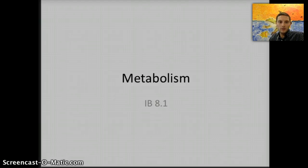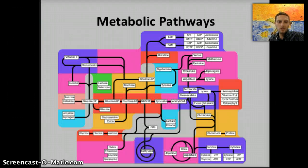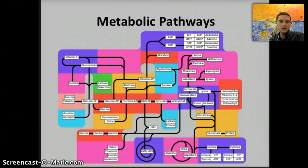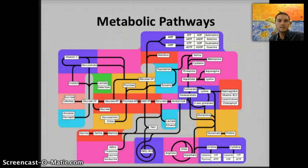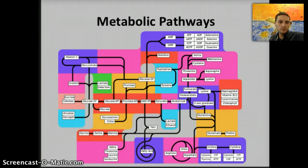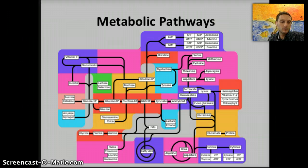A metabolic pathway can be viewed as a sequence — a number of steps that occur in order for something to happen. These metabolic reactions are linked so that sometimes the products of one reaction help to drive, or act as the on switch for, the next reaction. There are interactions that occur that help to produce some end product or end result.